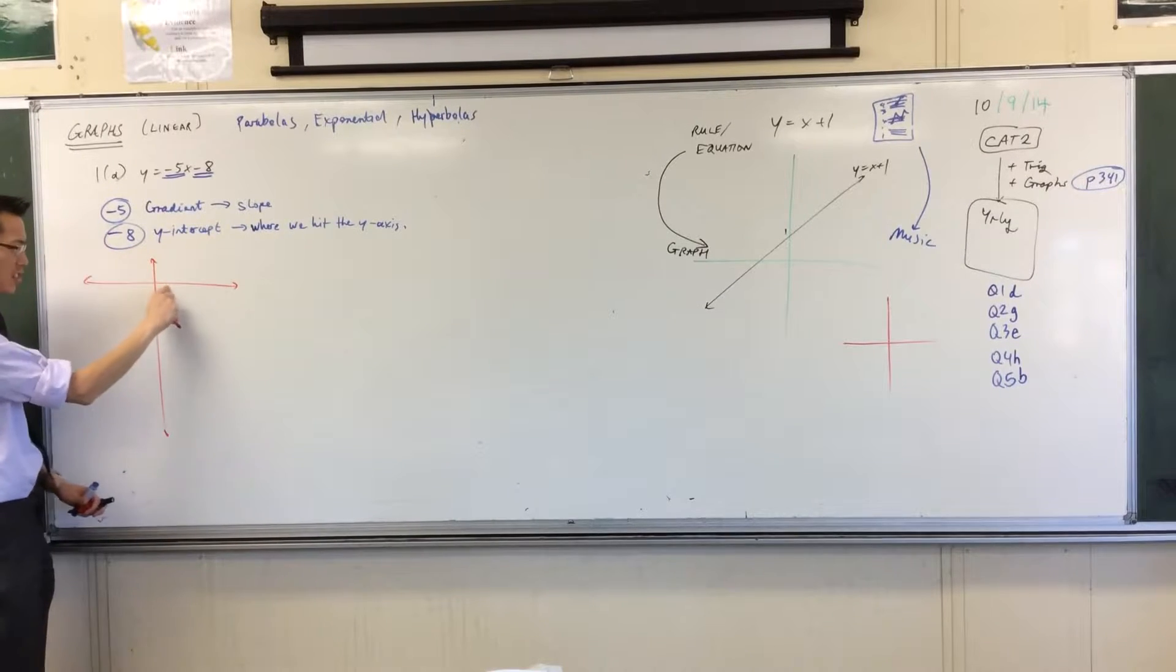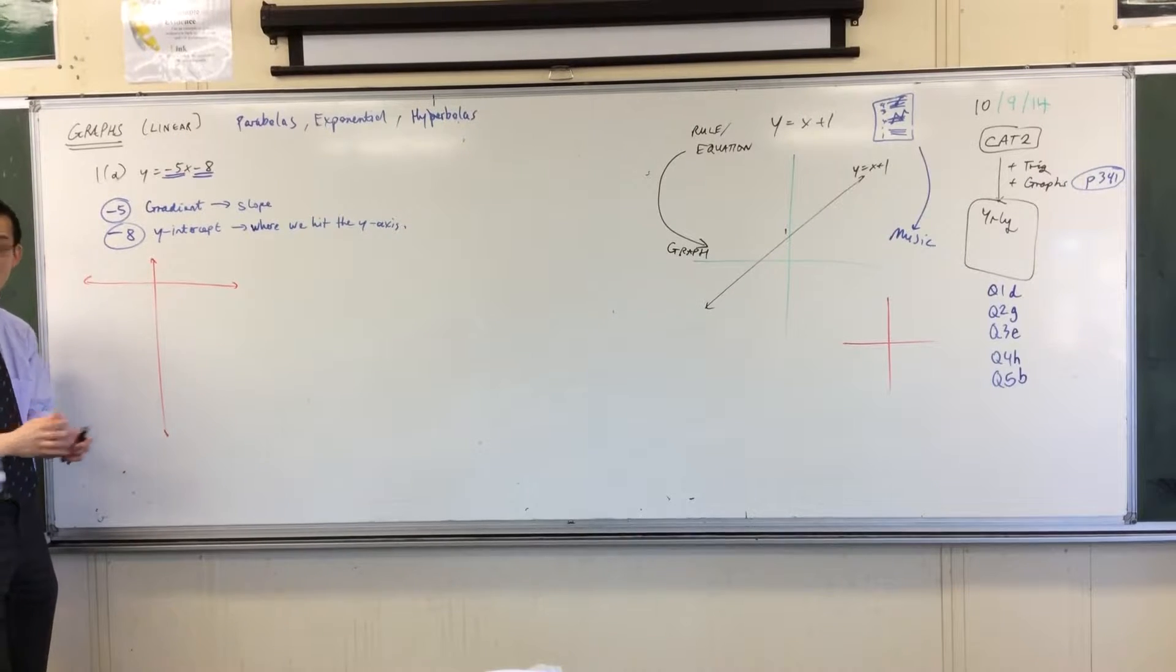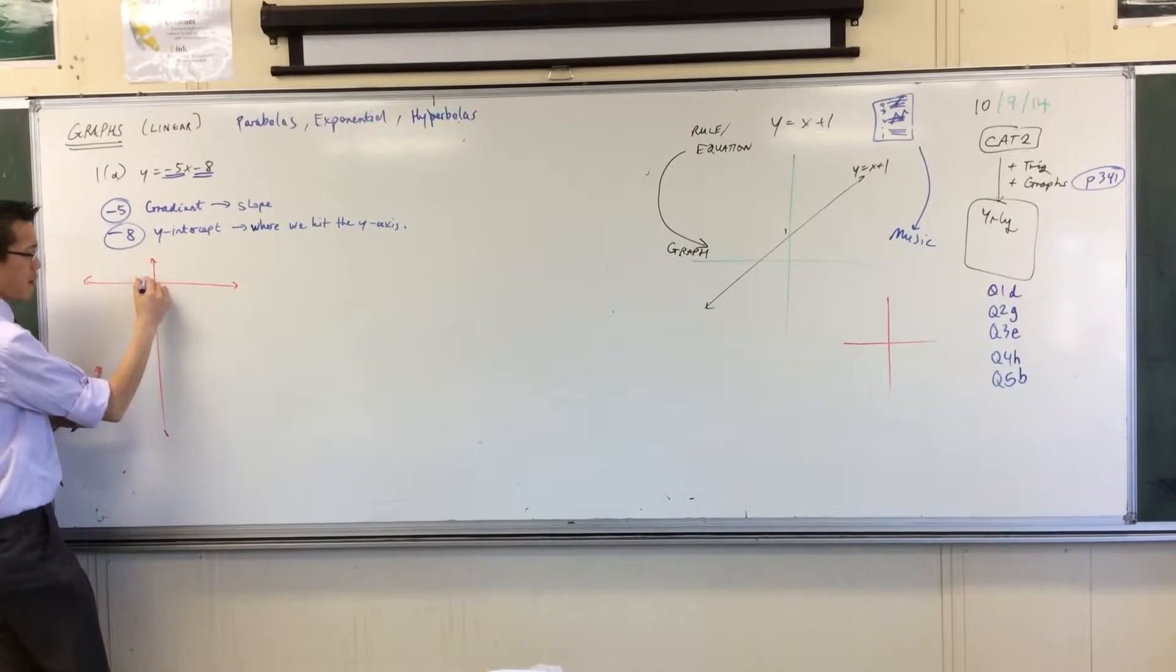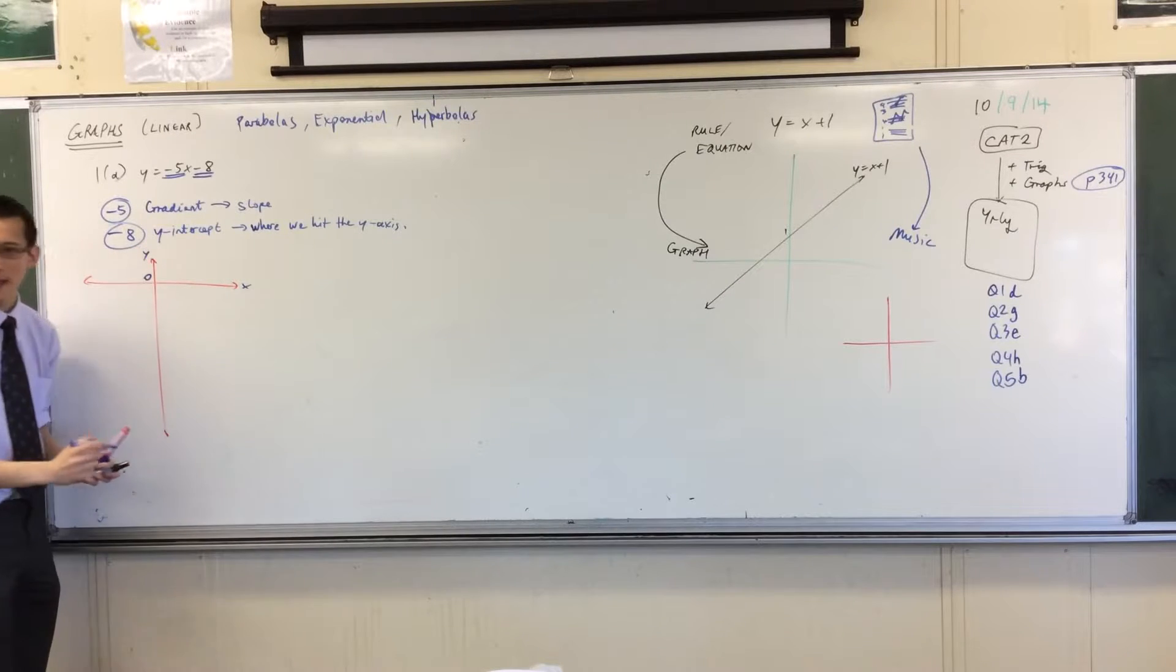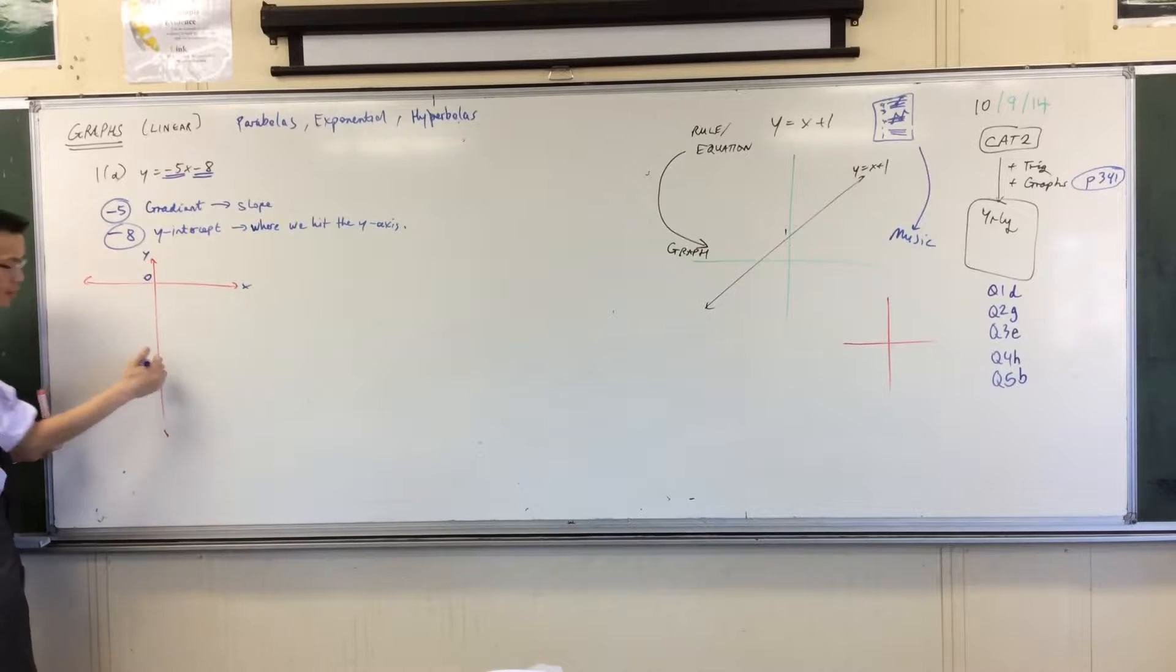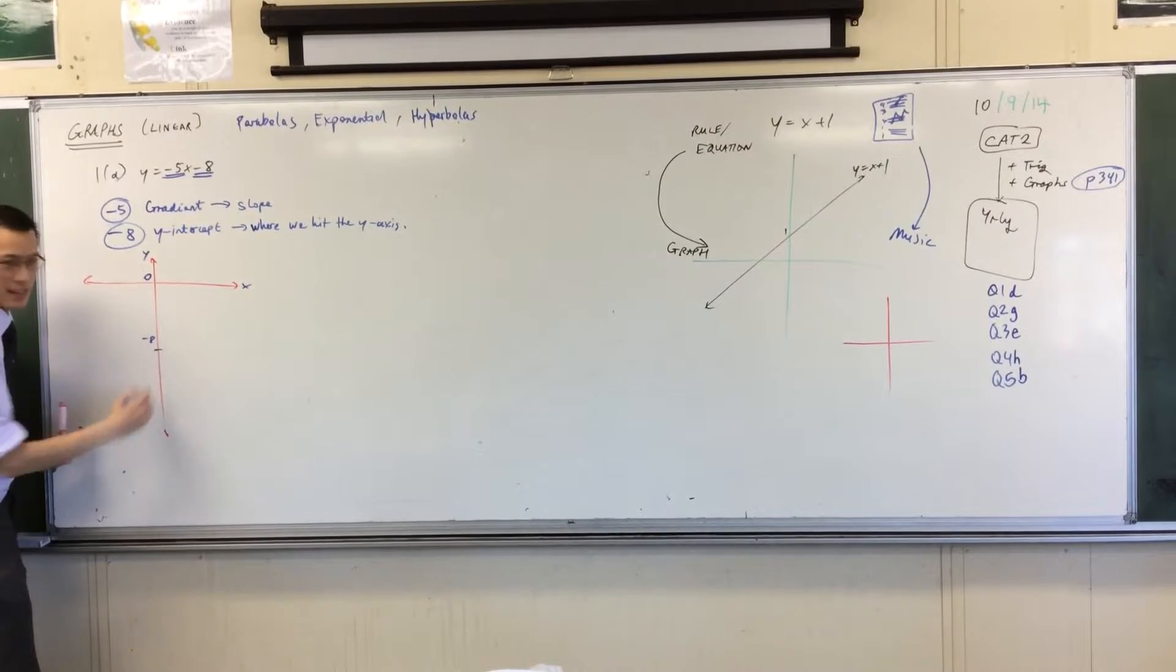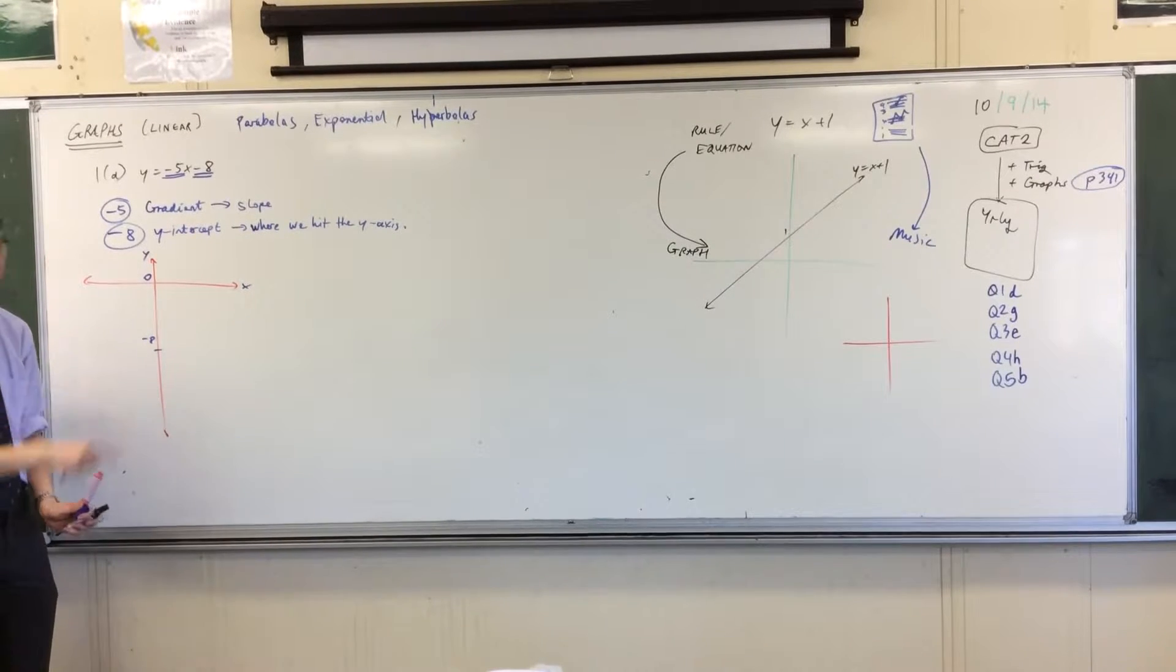So that means, number one, this y-intercept is going to be all the way down, negative 8. Actually let's put that on now. So if I've got 0 up here, that's the origin. There's my y-axis, there's my x-axis. So here is where the y-axis is intersecting with the graph. So I'll just make that minus 8. There's no reason to put minus 1, 2, 3, 4, 5, 6, 7, 8. You just need the one that's important.